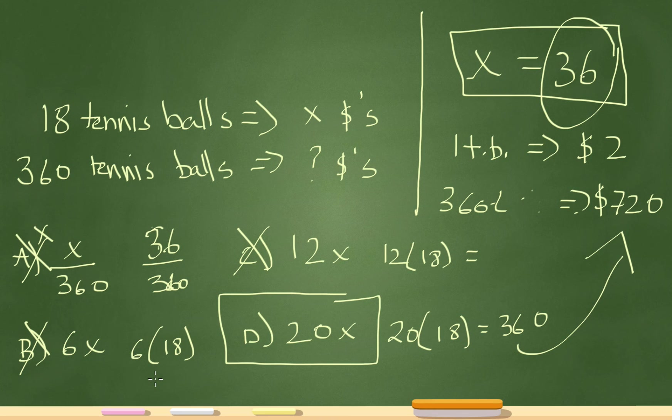Now if I go to B, B would be 6 times 36, which is 216. So again, we see that doesn't work. Then I go to C, and C would be 12 times 36, which is 432. Again, it doesn't work out.